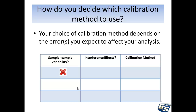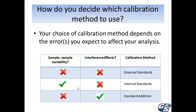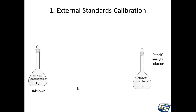If you do not expect sample-to-sample variability and do not expect interference effects, then you can just use the external standards method of calibration — the most basic method that people usually learn about first. If you expect sample-to-sample variability but not interference effects, you would use the internal standards method. If you do not expect sample-to-sample variability but do expect interference effects, you would use the standard addition method.